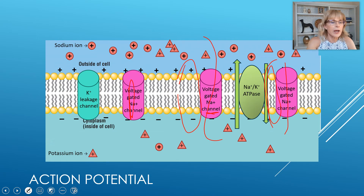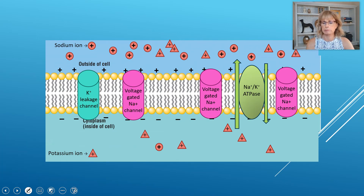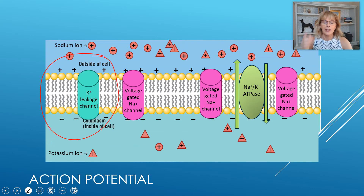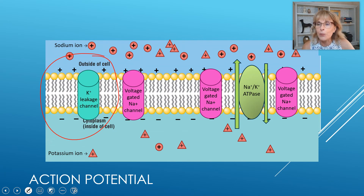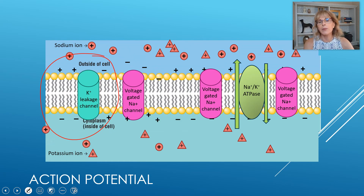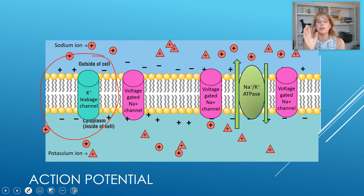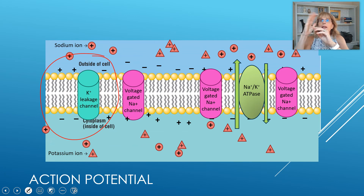When voltage-gated sodium channels are opened because the membrane has shifted — and this part here would be the axon hillock — when that voltage changes at the axon hillock, it starts opening voltage-gated sodium channels. When one opens, it changes the charge of the next part of the membrane, opening the next voltage-gated channel, which opens the next, and the next. It's like dominoes falling — you tip one domino over and it tips its neighbor, which tips the next, and so on.